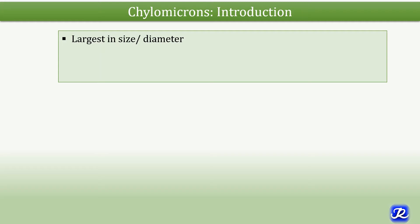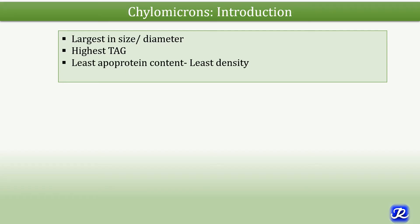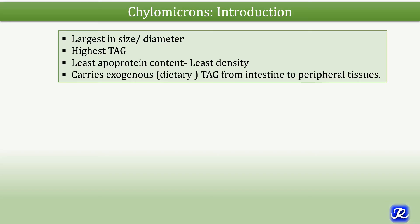Let's begin with some important characteristics of chylomicrons. They are largest in size out of all lipoproteins, with the largest diameter. The highest concentration of triacylglycerol is present in chylomicrons. They have the least apoprotein content and the least density. Chylomicrons carry exogenous, that is dietary, triacylglycerol from the intestine to peripheral tissues.